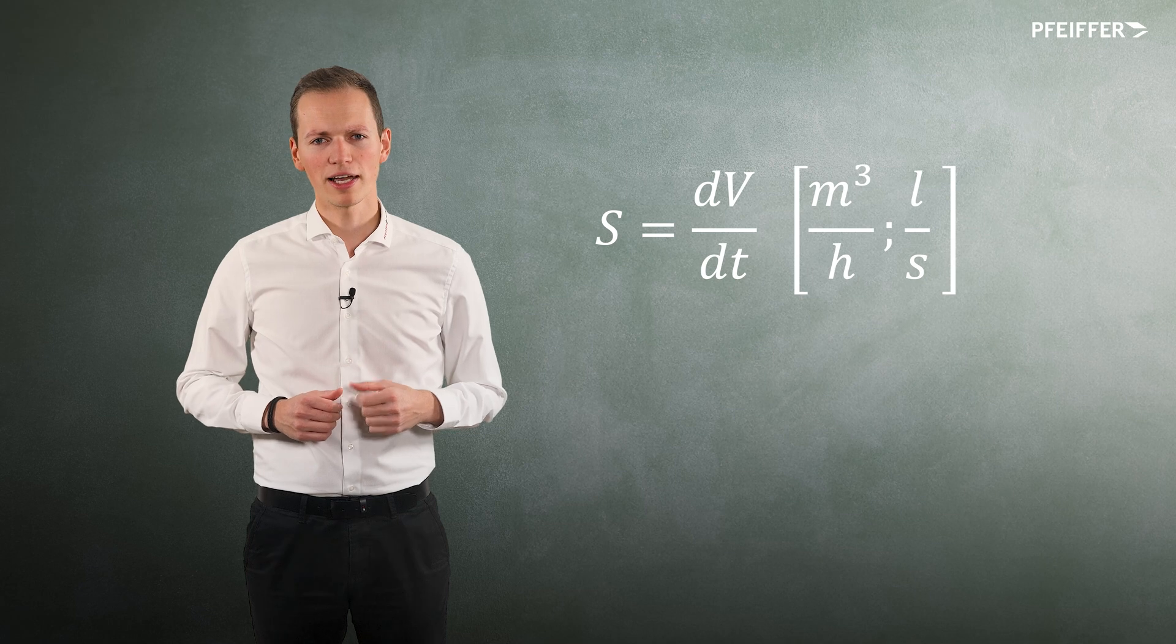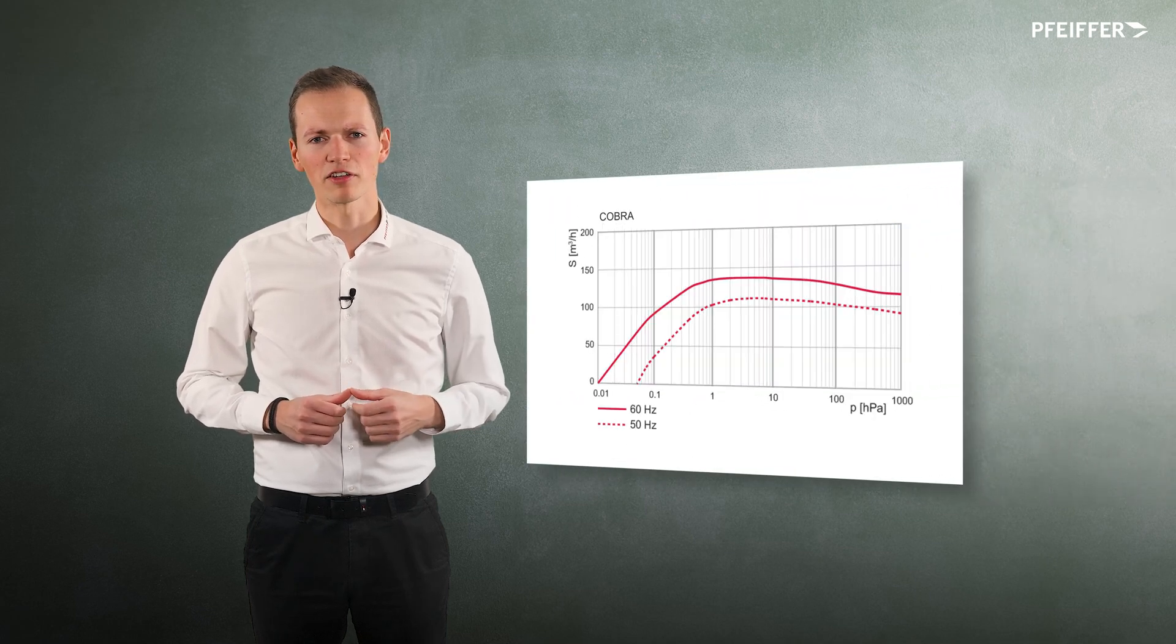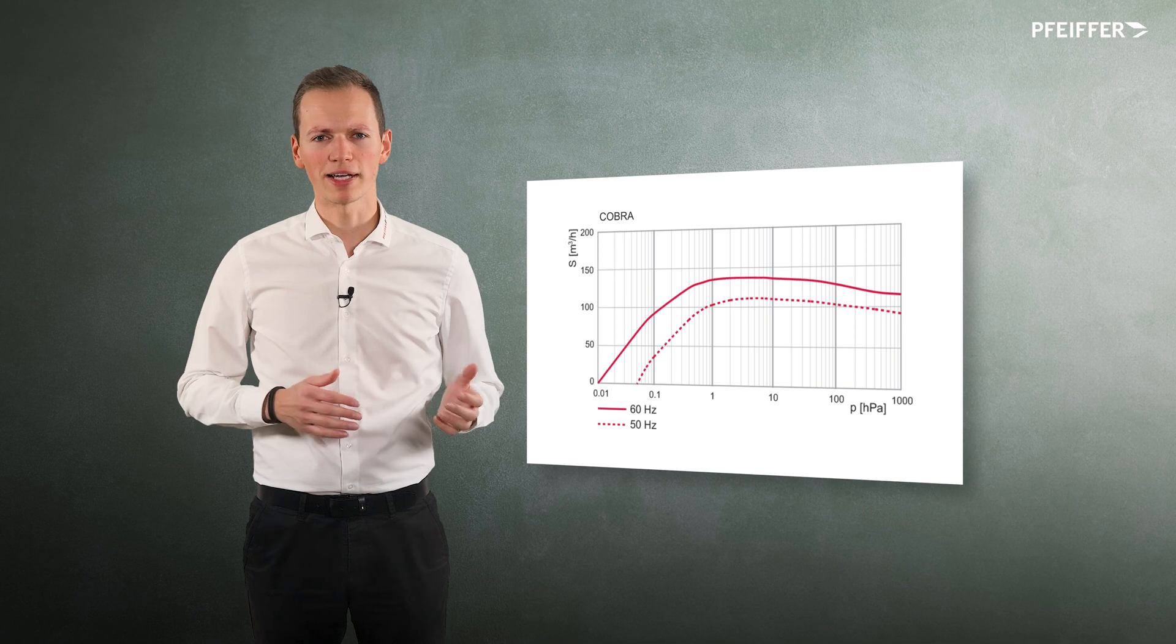Each pumping principle has a characteristic pumping speed curve where the pumping speed is plotted against the pressure prevailing in the system.